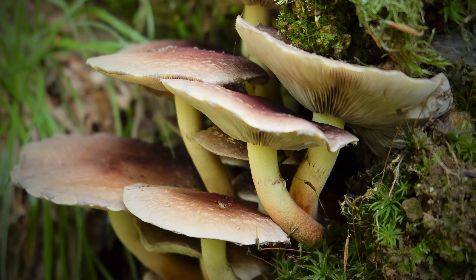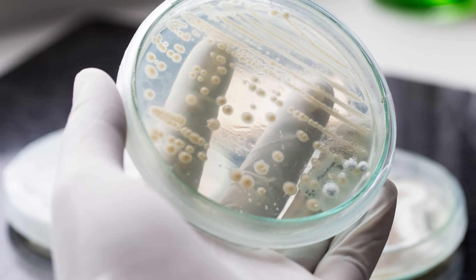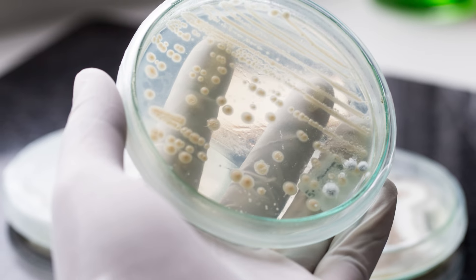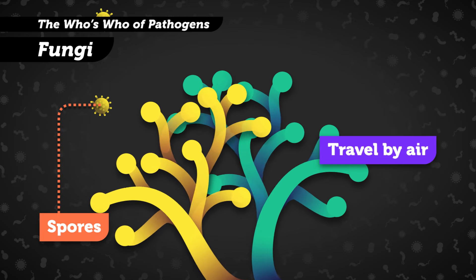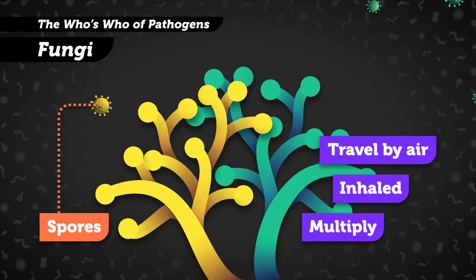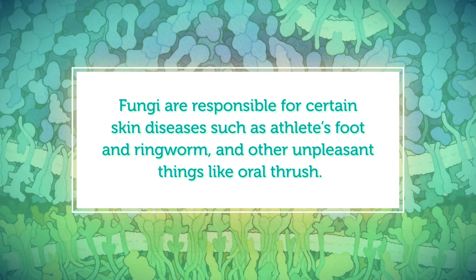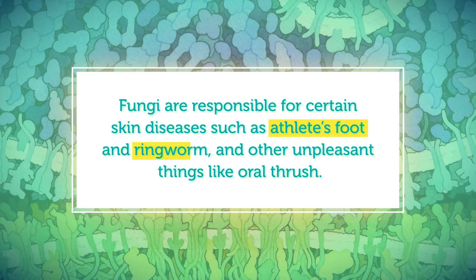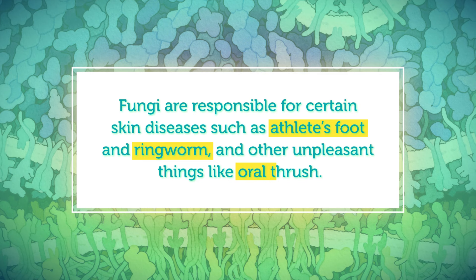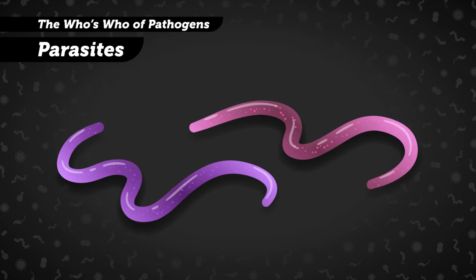Then there are fungi — your molds, yeasts, and mushrooms — and they're also eukaryotes. Some are made up of single cells, some are multicellular, some are harmless pizza toppings, and some make us sick. Fungi release tiny cells that can reproduce on their own, called spores. Certain kinds of pathogenic spores travel easily in the air, where they can stick to our skin or be inhaled. During an infection, fungal cells multiply, growing into places they shouldn't and feasting on the cells they infect. Fungi are responsible for certain skin diseases such as athlete's foot and ringworm, and other unpleasant things like oral thrush.